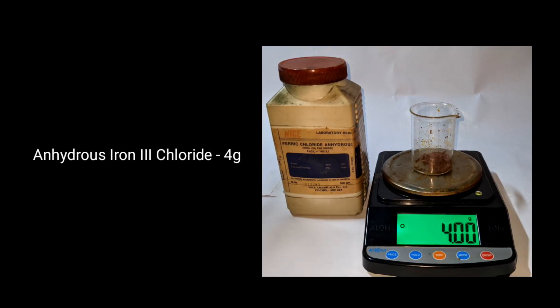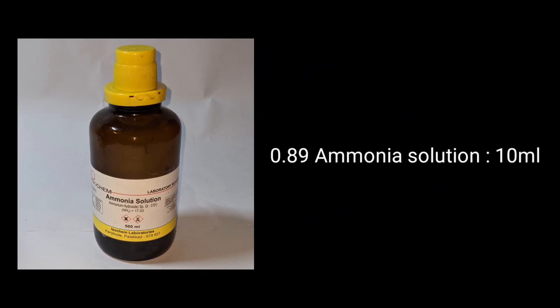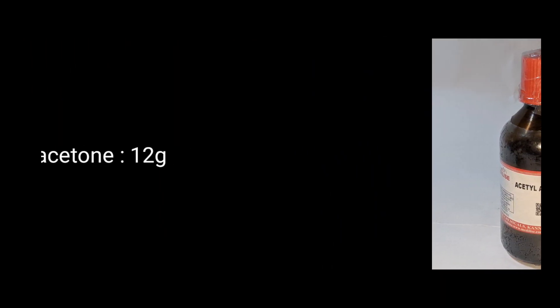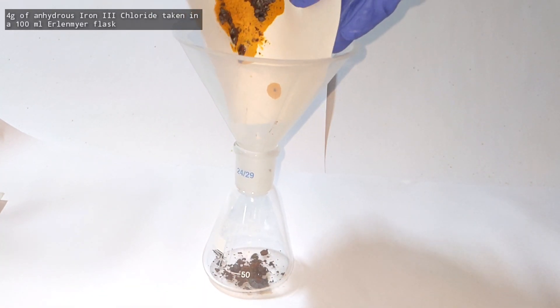Materials required for this experiment are 4 grams of anhydrous iron(III) chloride, 10 milliliters of 0.89 specific gravity ammonia solution, and 12 grams of acetylacetone. Transfer the 4 grams of anhydrous iron(III) chloride to a 100 milliliter Erlenmeyer flask.